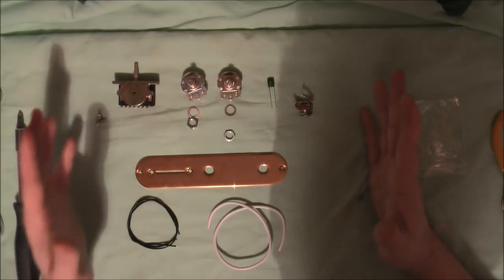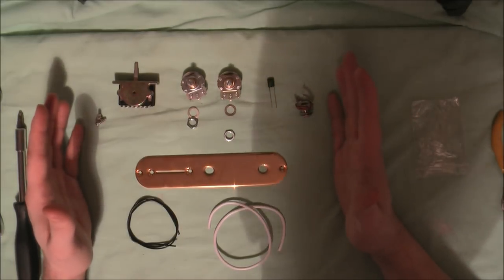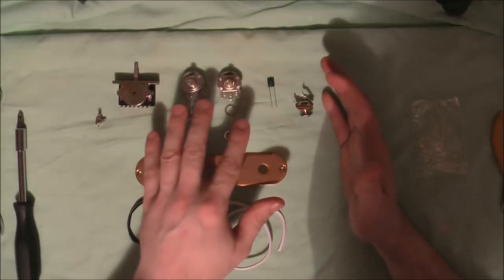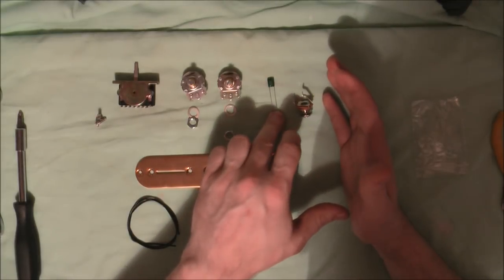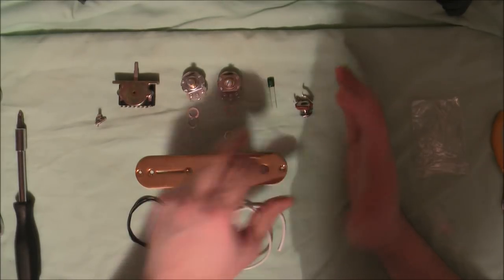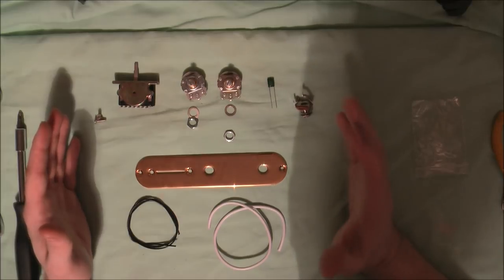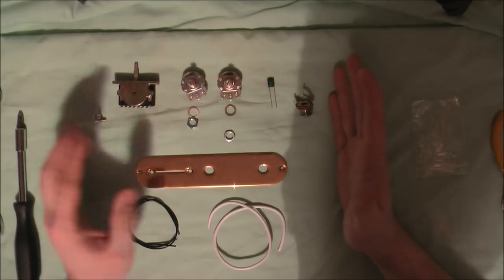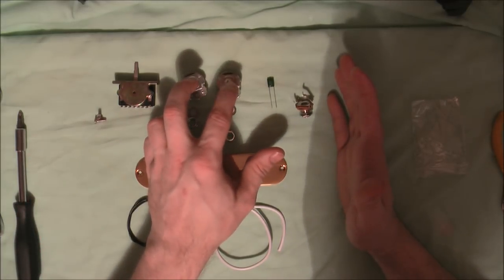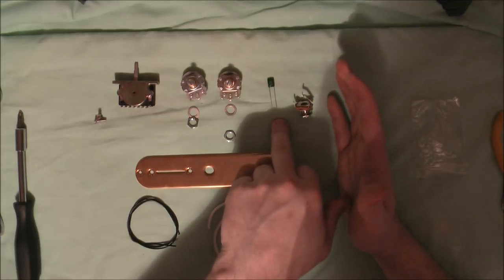We're using our own standard pots which are in this case 500k and a 0.047 microfarad capacitor. As a rule, if you're building a control plate for single coil pickups you would tend to use 250k pots and a 0.022 microfarad capacitor. If you are building a control plate for a guitar with humbuckers then you would tend to use 500k pots and a 0.047 microfarad capacitor.